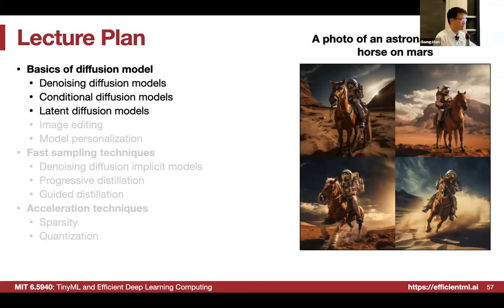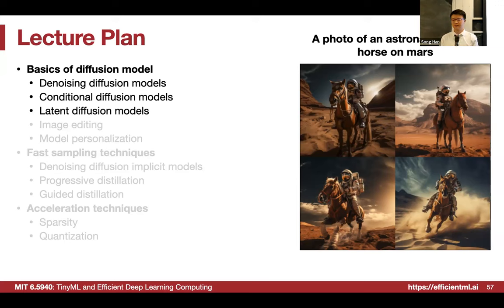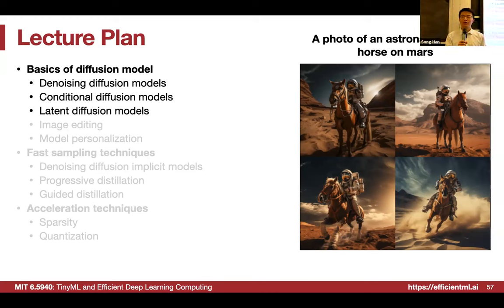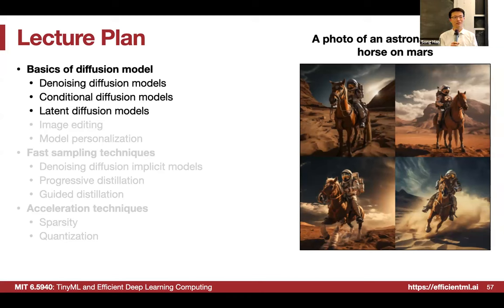Let's take a five-minute break before jumping into latent diffusion models. Welcome back. Diffusion models have complicated math, but all we need to remember is what we are predicting: the noise. Classification networks predict a class, detection networks predict bounding boxes, segmentation models predict masks, and diffusion models predict the noise — so we can denoise and get a clean image.